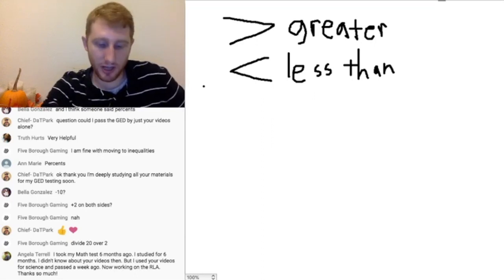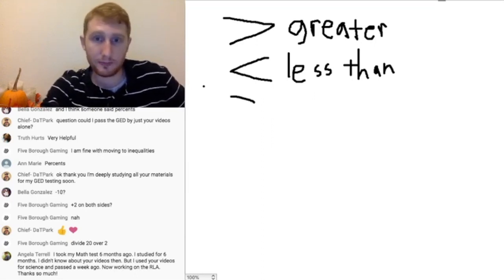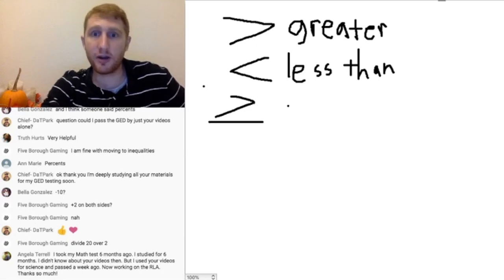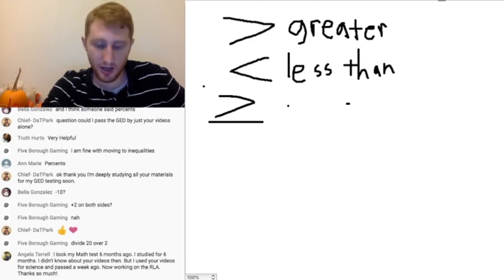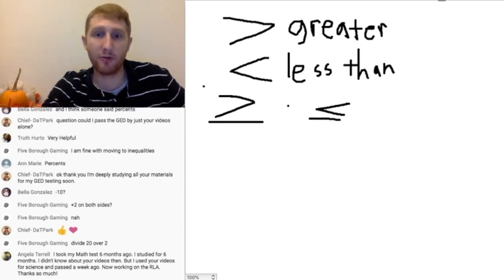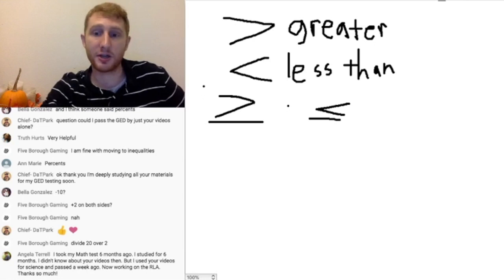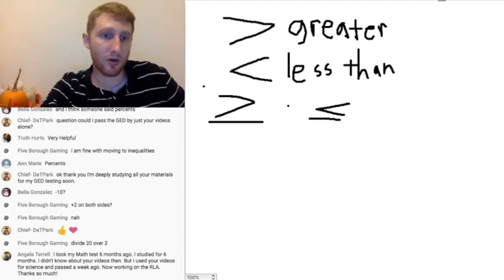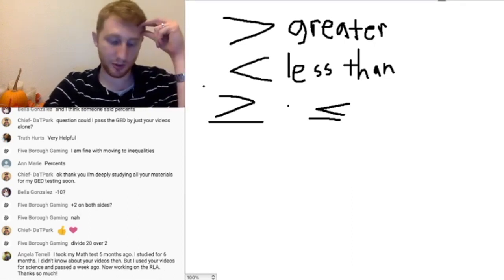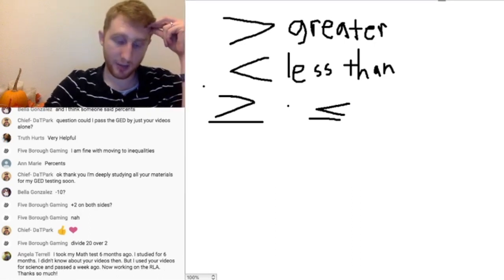We're going to be looking at some RLA stuff fairly shortly. So, this is greater than, this is less than, this is greater than or equal to — the little line underneath means greater than or equal to. The last sign is less than or equal to. So we've got greater than, less than, greater than or equal to, and less than or equal to. The key idea is that whenever you've got a negative number you're dividing or multiplying by, you have to reverse your inequality.